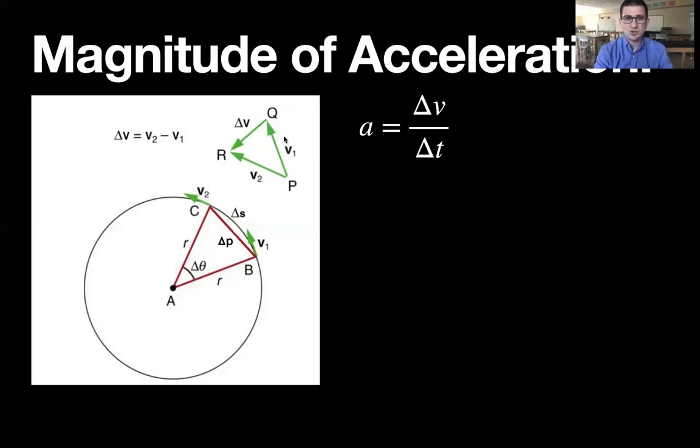So we can use our similar triangle rules to say that delta V, the base of the triangle and one of the legs is proportional to the delta P, the base of the triangle and one of the legs. So and again, how would you know how to do this? We're just along for the ride.